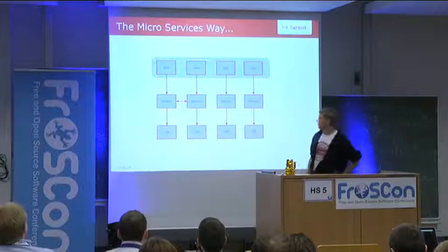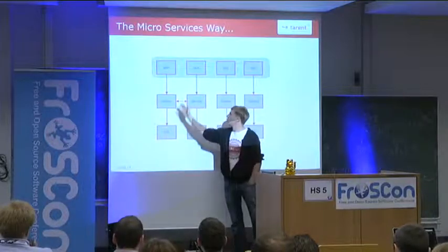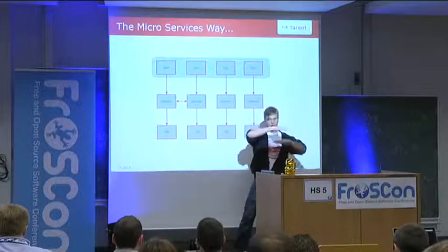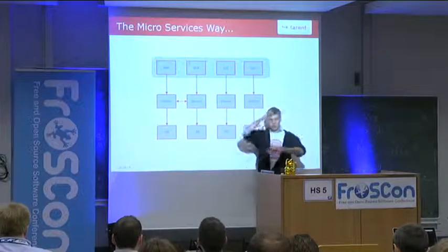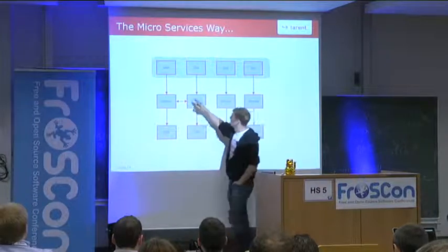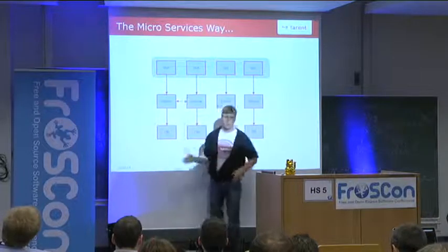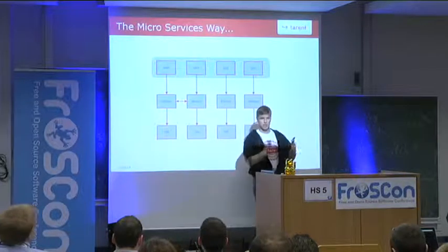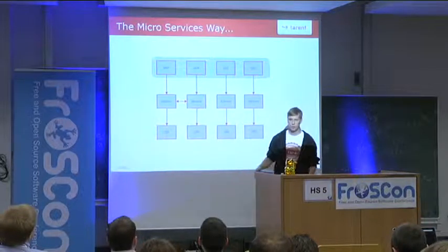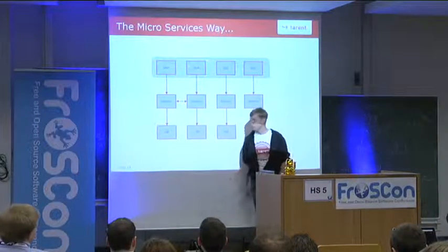My ideal view of a microservice architecture looks like this: for every functionality, you have a cleanly designed column where you split on every horizontal layer — the database layer, service layer, and especially the UI layer — into separate microservice columns. You split the application into single part-applications that are distributed, deployable, changeable, and developable separately.